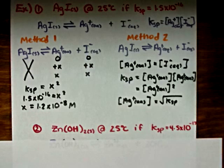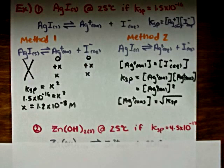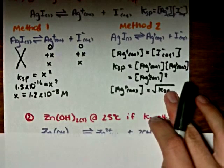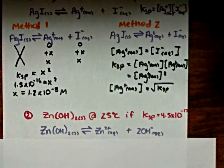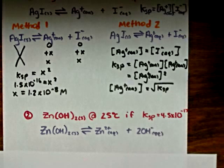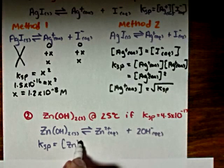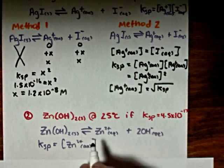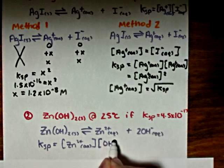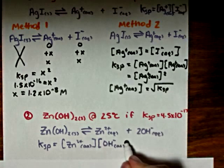We have zinc hydroxide at 25 degrees Celsius with a Ksp value of 4.5 times 10 to the negative 17, and again we're going to calculate the molar solubility of this salt. This will be our equilibrium equation, and for this equilibrium the equilibrium expression will be equal to the concentration of the zinc ions times the concentration of the hydroxide ions squared.